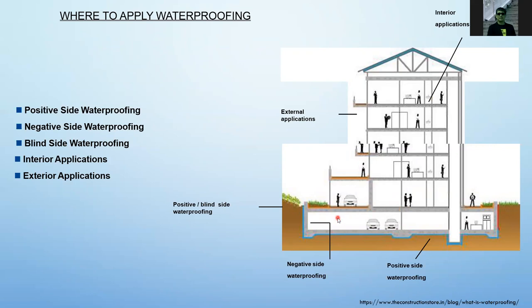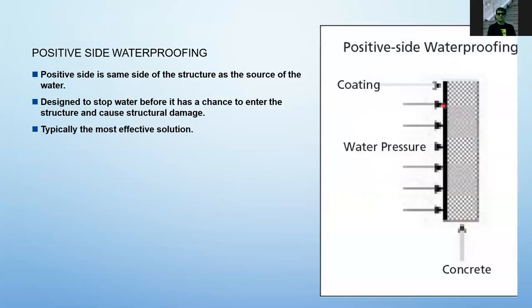There is also interior application — in toilets, bathroom floorings, and kitchen floorings, waterproofing is applied. If you are building a multi-floor apartment building, you will definitely put waterproofing in the kitchen area. It is also very important to put waterproofing on the exterior. The positive side waterproofing means placing a coating or membrane on the outside of the building, where water pressure acts against the structure.